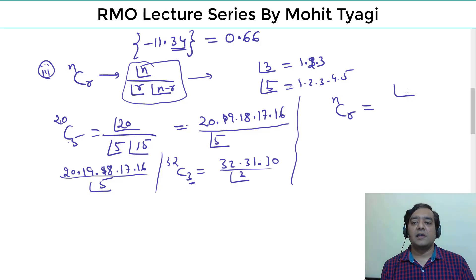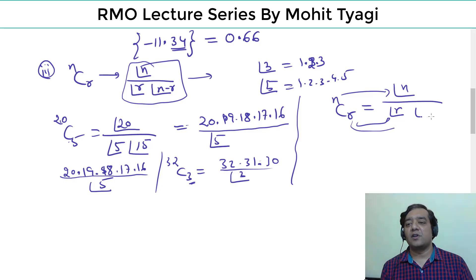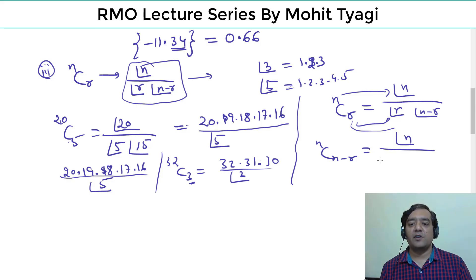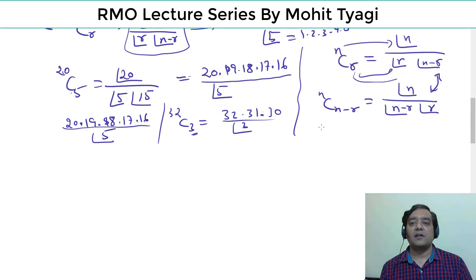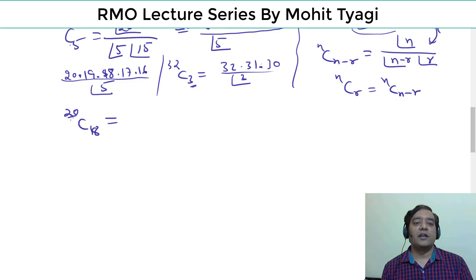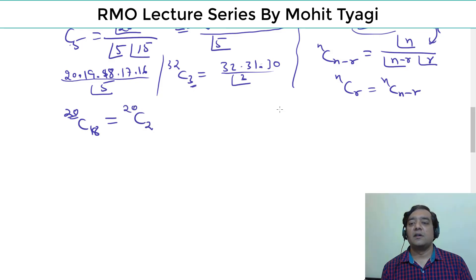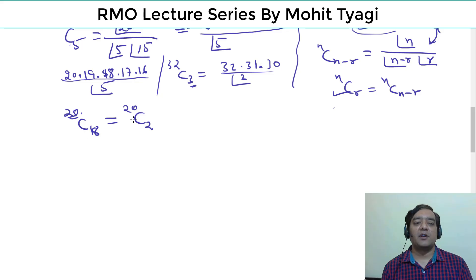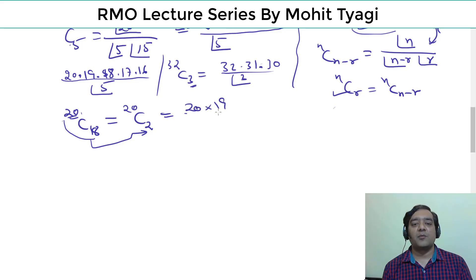The general method for nCr: write n! on top, and r! and (n−r)! on the bottom. Note that nCr = nC(n−r), since both have n! on top and the same pair of factorials below. So for example, 20C18 = 20C2, which means we write just 2 terms from 20 downward divided by 2! — much simpler.